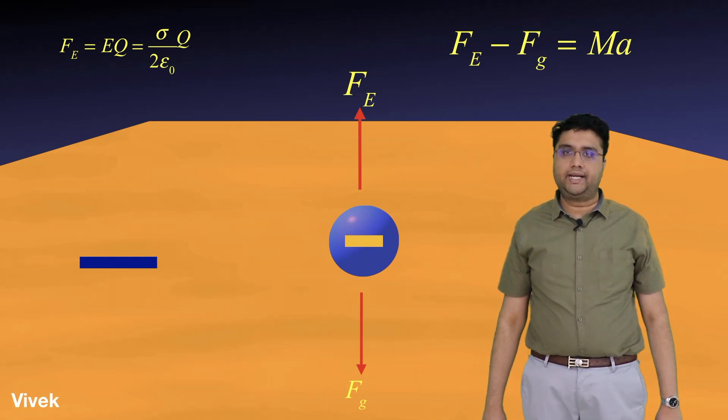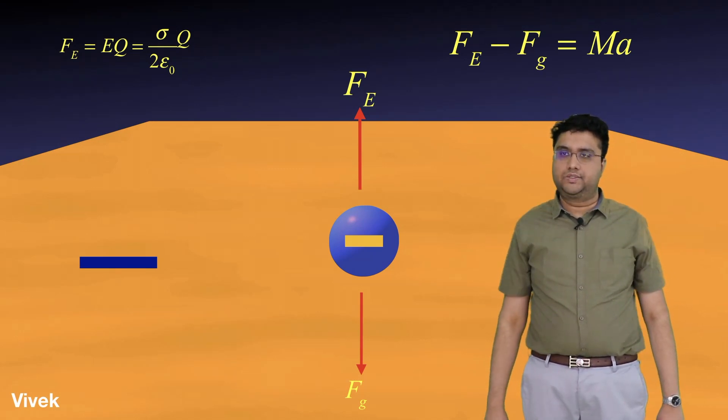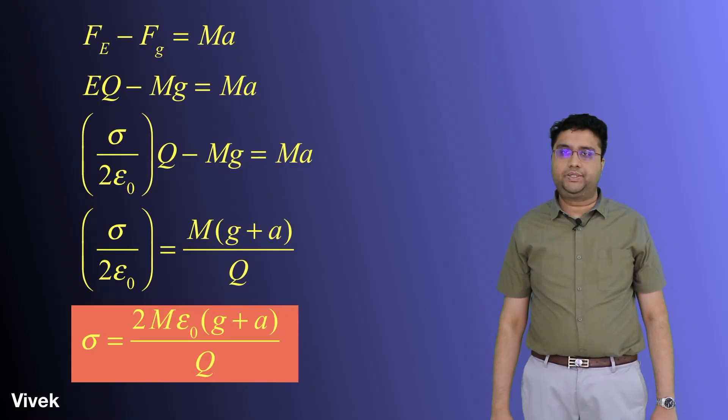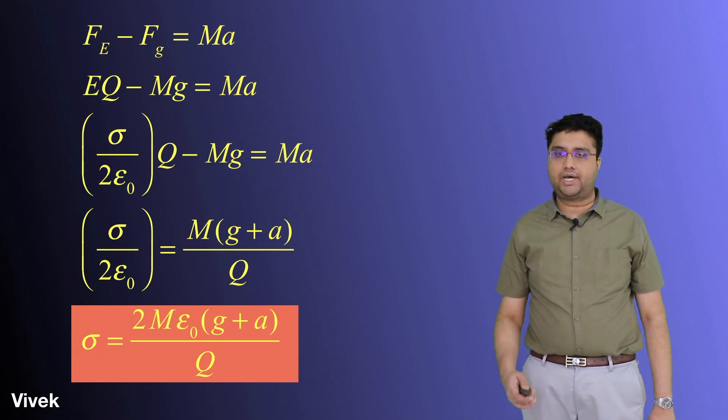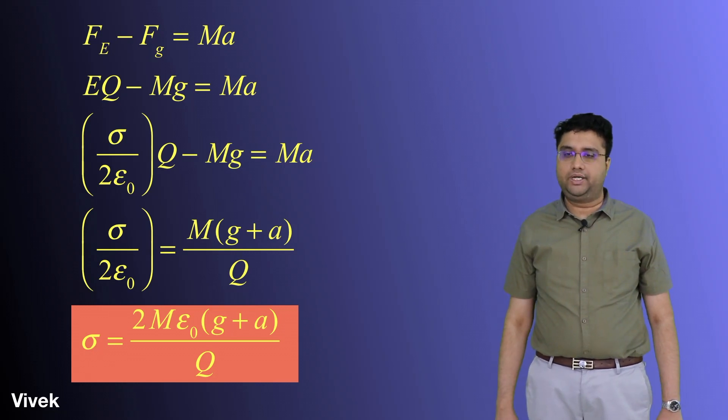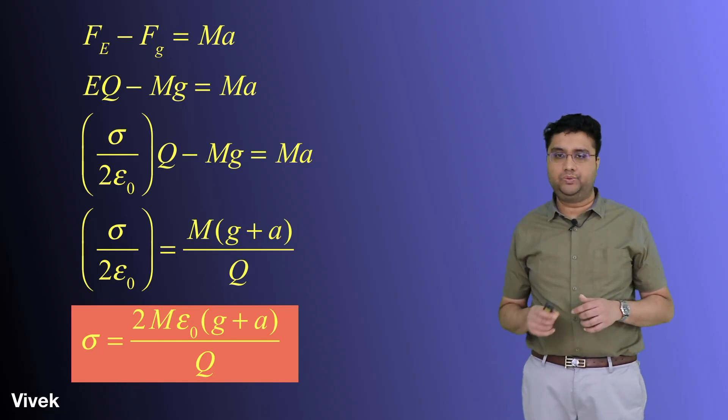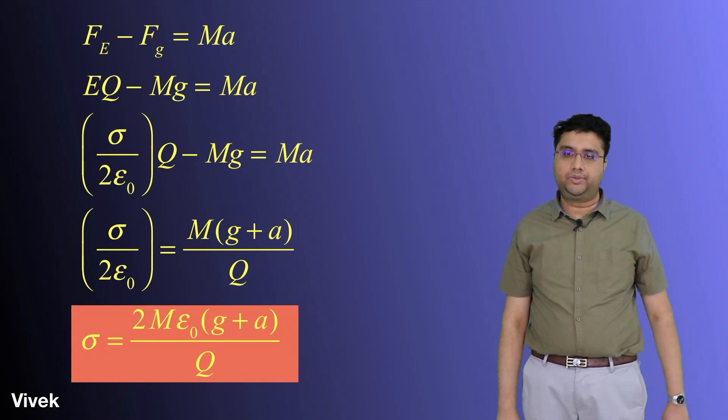The same result can be used here. So that makes the net electric force in the upward direction as sigma by 2 epsilon naught into charge. Let's assume the charge to be Q. So the net electric force is sigma by 2 epsilon naught into Q. The downward force due to gravity is Mg. F_E minus F_g equals Ma. Substituting F_E, EQ minus Mg equals Ma. But E is sigma by 2 epsilon naught, which equals M times (g plus a) by Q. That gives sigma equals 2M epsilon naught into (g plus a) by charge.